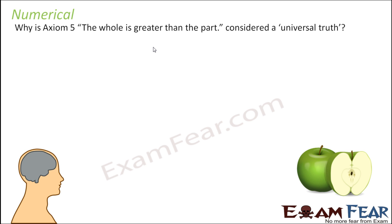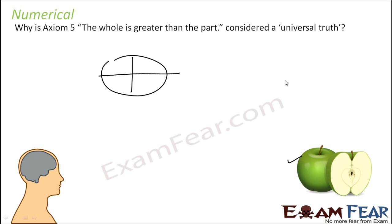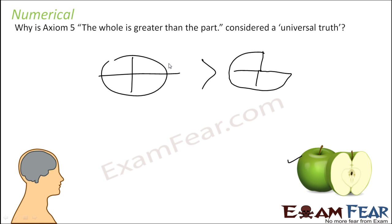Why is Axiom 5 — that the whole is greater than a part — considered a universal truth? It is considered universal truth because it is valid in any scenario. A full apple is bigger than half an apple; a full pizza is bigger than a partial pizza. This is true in any scenario, and that is why it is called a universal truth.